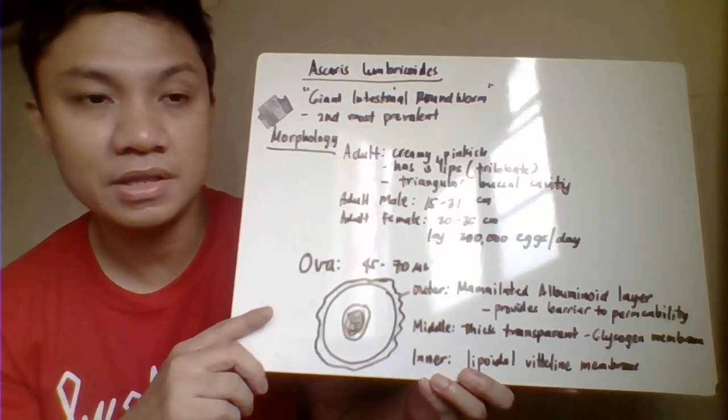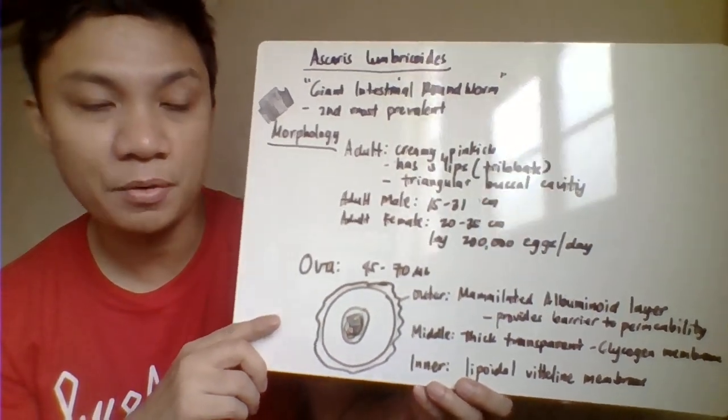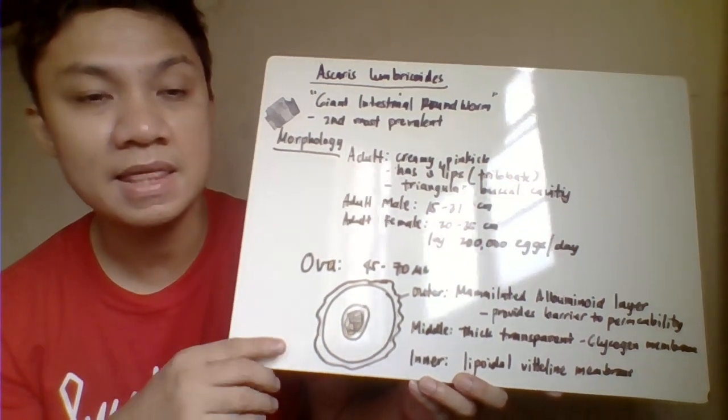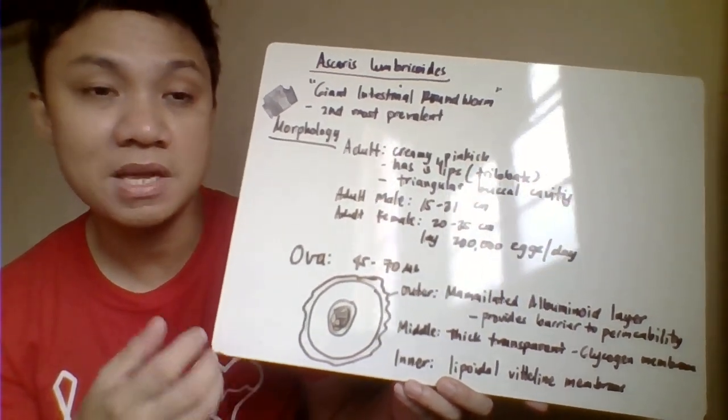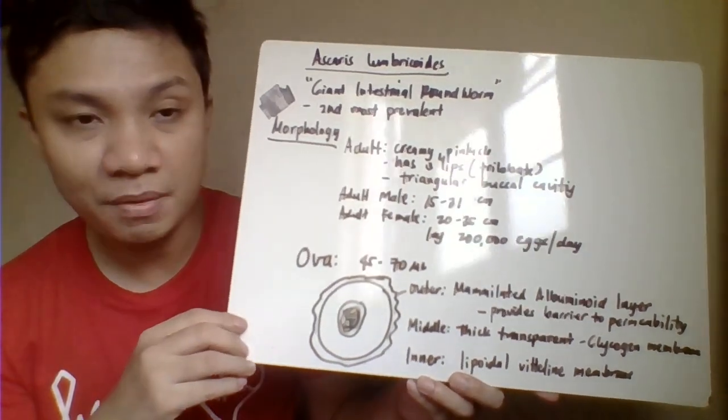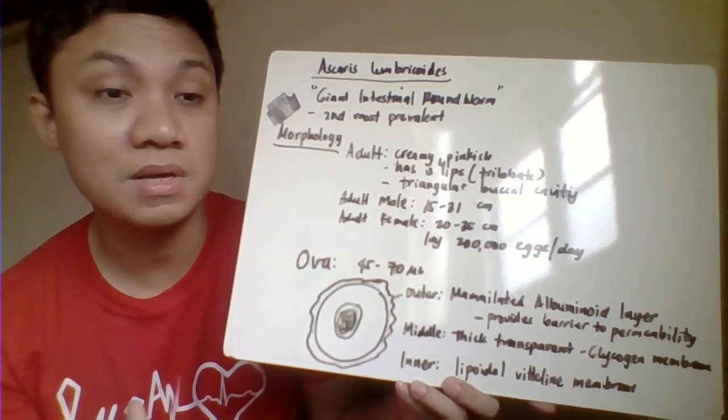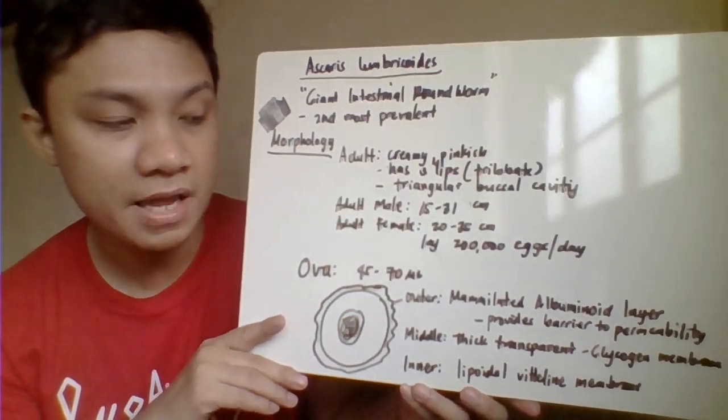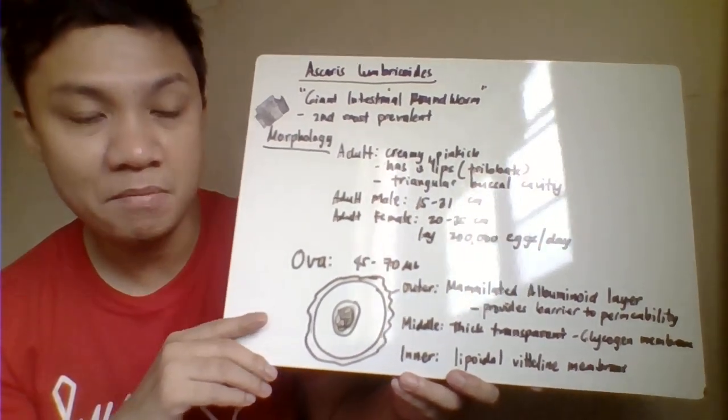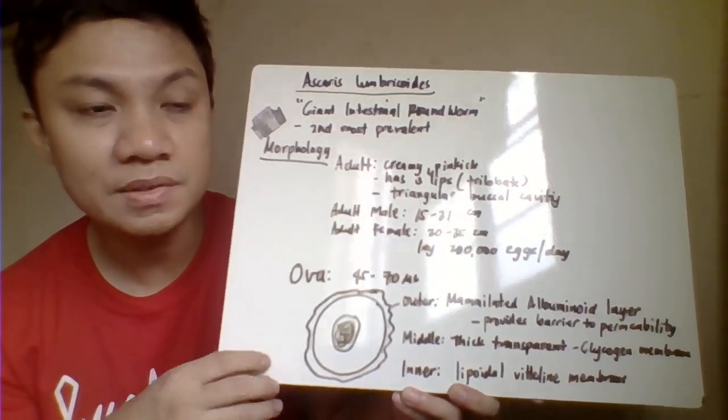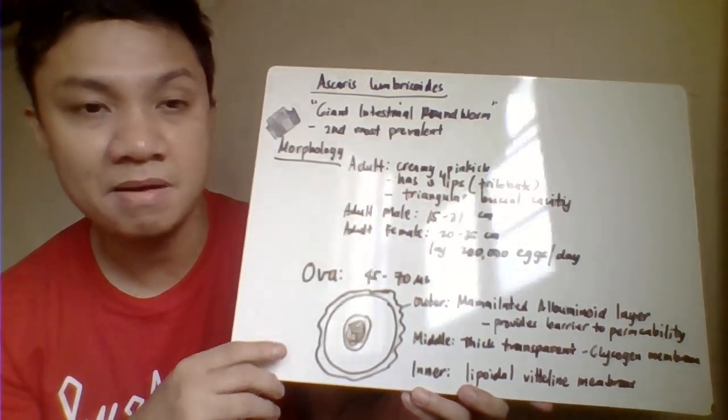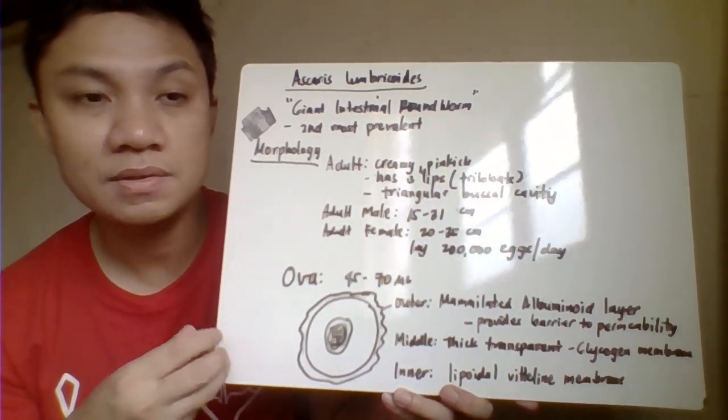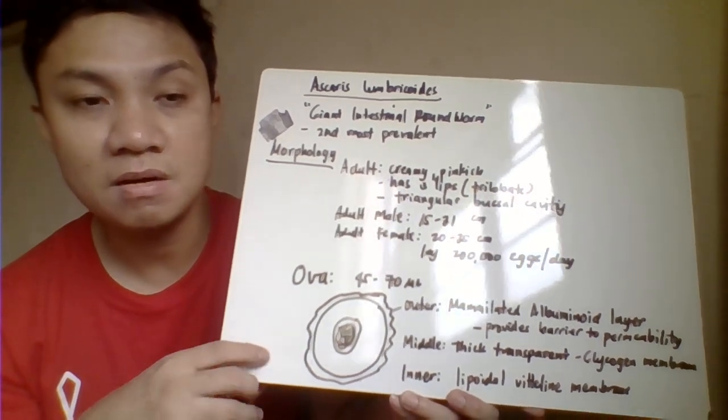For the ova, they measure 40 to 75 by 25 to 70 micrometers and have three layers. The outermost layer is made up of a mamillated corticated albuminous layer, which is protein. This provides a barrier for permeability. The middle portion is made up of the transparent layer, which is a glycogen membrane - the carbohydrate. The innermost layer is made up of lipoidal vitelline membrane - the lipid component. So the outer membrane is albumin protein, the middle is glycogen carbohydrate, and the innermost is the lipid component.